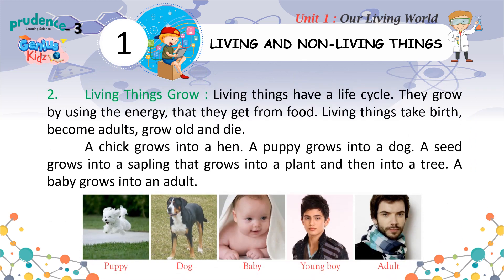Two: living things grow. Living things have a life cycle. They grow by using the energy they get from food. Living things take birth, become adults, grow old and die.